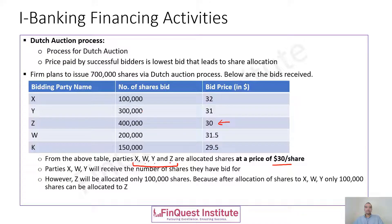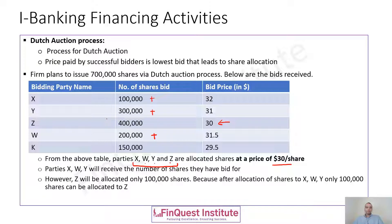Up until now, the shares allocated are: 100,000 for X, 300,000 for Y, and 200,000 for W — totaling 600,000 shares earmarked. There is still a gap of 100,000 shares since the target is 700,000. We now look at the next entity who bid the highest price, which is party Z.